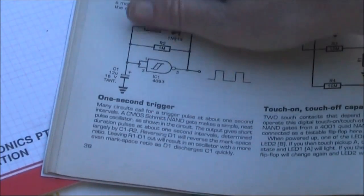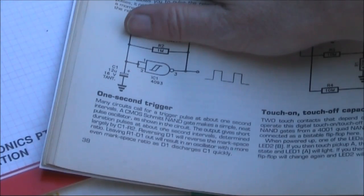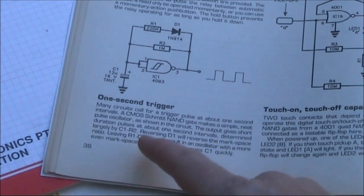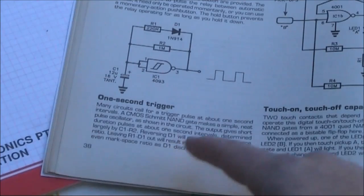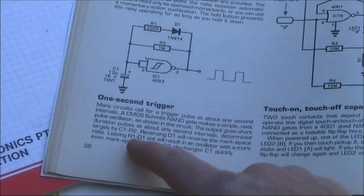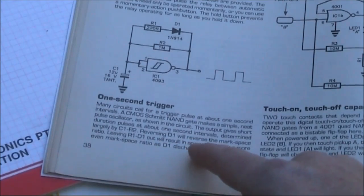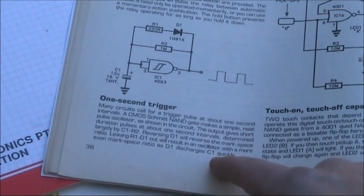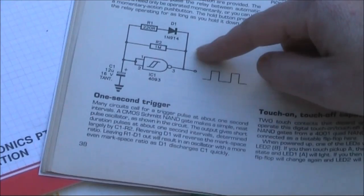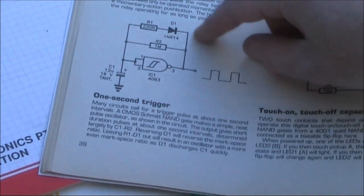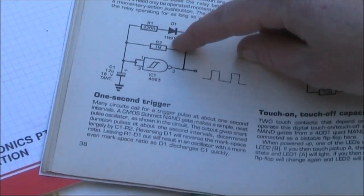You could build the circuit without the diode and second resistor and you'd get a square wave output waveform. But we want something different. Reversing D1 will reverse the marked space ratio. Leaving R1 D1 out will result in an oscillator with a more even marked space ratio, as D1 discharges C1 quickly. We don't want an even marked space ratio, so we keep the two in.